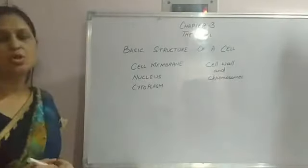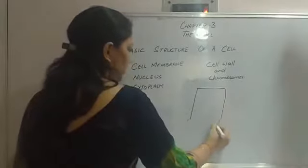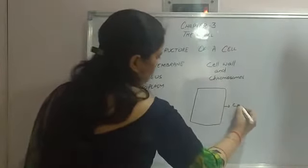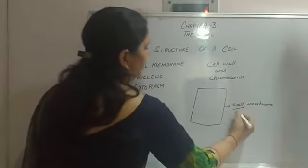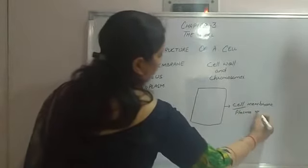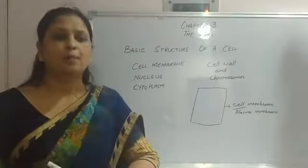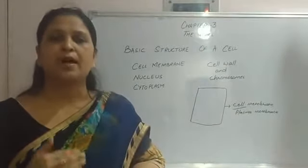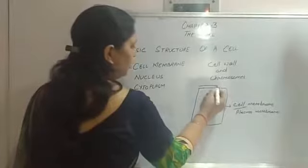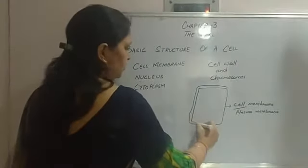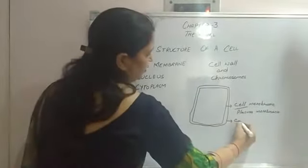Cell membrane is also known as plasma membrane. Cell membrane or plasma membrane is enclosed by an outer protective layer called cell wall. This is your cell wall.